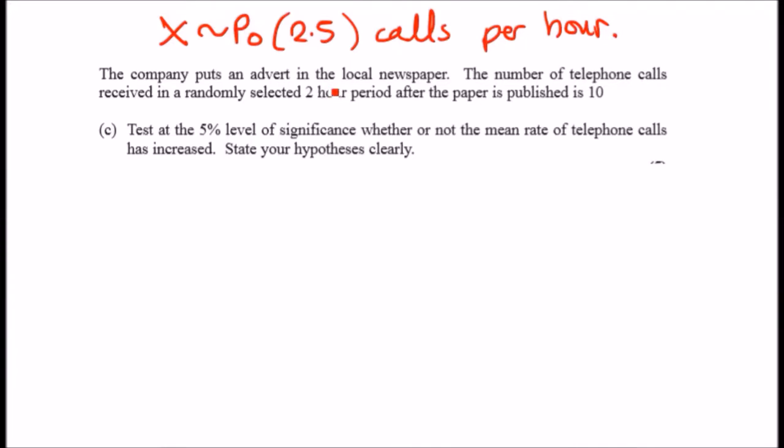So the company puts an advert in the local newspaper. According to this statement, the number of telephone calls received in a randomly selected two-hour period after the newspaper is published is 10. Let's just write this down here. This is just a statement, it's not an average.